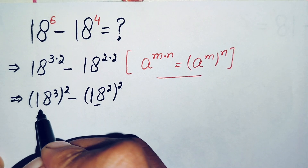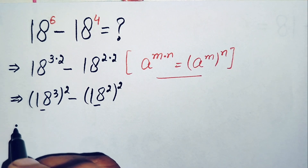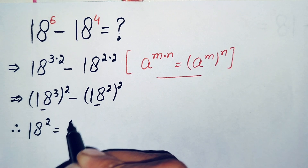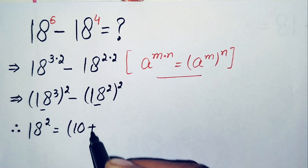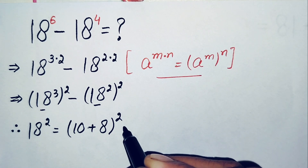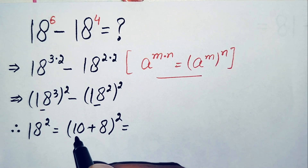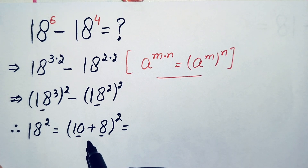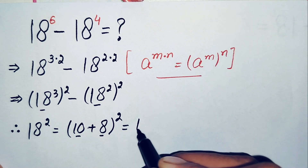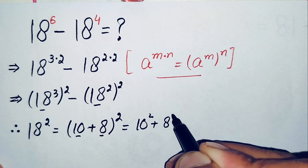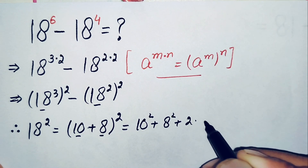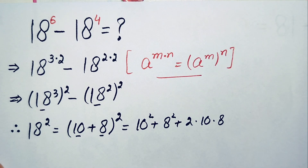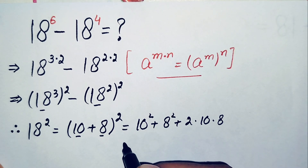Now we need to find the values of 18² and 18³. For 18², we write 18 as (10 + 8) and apply the algebraic identity (a + b)² = a² + b² + 2ab. This gives us 10² plus 8² plus 2 times 10 times 8.